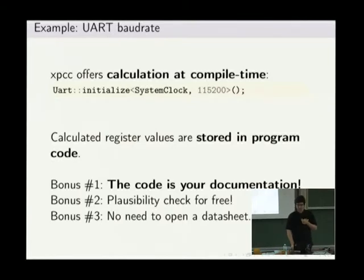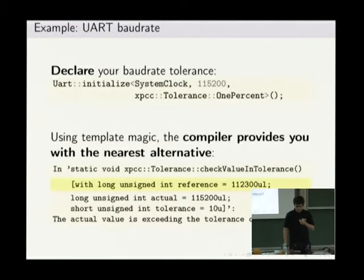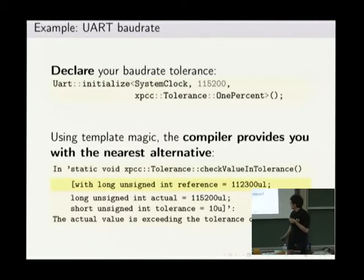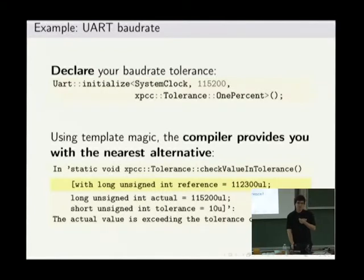That doesn't exactly solve the issue of knowing whether this is the value you get out. That's why we added a tolerance: you can declare 'I want this baud rate, and I want this exact tolerance.' If this is not achievable, the compiler will throw you an error. The compiler calculates the nearest possible baud rate using the current configuration of the clock tree and prescalers, and it will give it to you. Unfortunately, template errors in C++ compilers are not beautiful, but it's better than nothing.